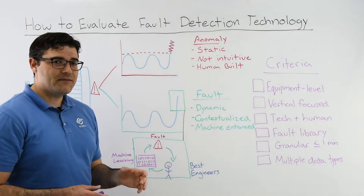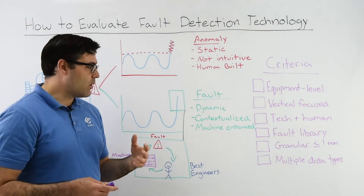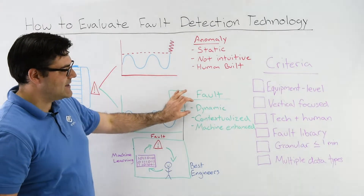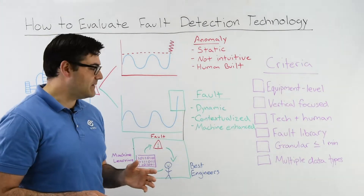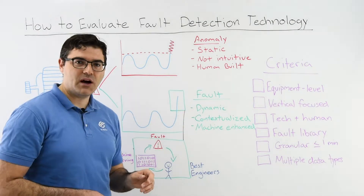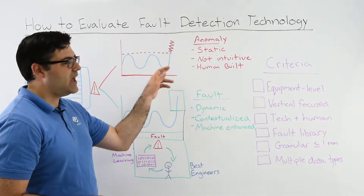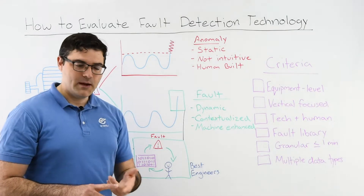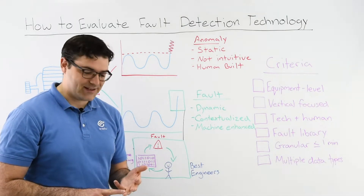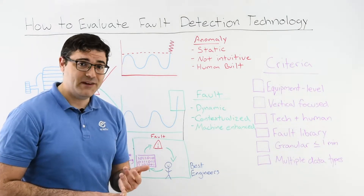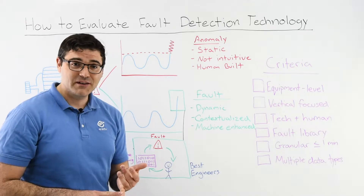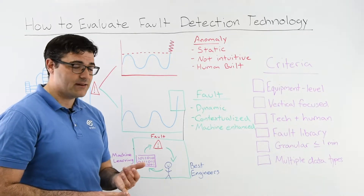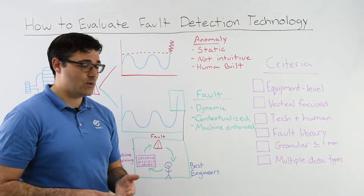Fault detection involves a lot more than just breaking a threshold. It's about having a dynamic understanding of the environment and contextualizing the problem. Not just saying that we have a spike in energy use, but my fan belt slipped, my motor failed, I have short cycling, my pump's not feeding my boilers, and I'm not going to have hot water. Those are the kinds of things you want to understand to bring the problem back to reality.